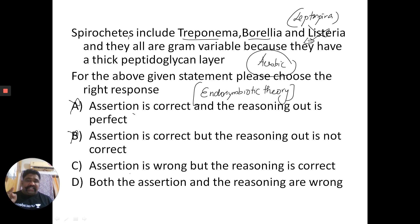C says assertion is wrong but the reasoning is correct. D says both the assertion and the reasoning are wrong. What is the reasoning here? They all are gram variable because they have a thick peptidoglycan layer.